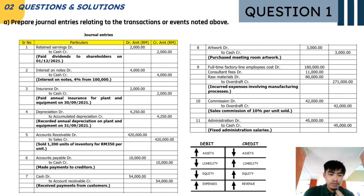Cash account is debited and accounts receivable is credited as we received payments from customers. Due to the purchase of artwork for the meeting room, the artwork account is debited and cash account is credited. For incurred expenses involving manufacturing processes, the overdraft account is credited while full-time factory and employee costs, consultant fees, and raw materials are debited.